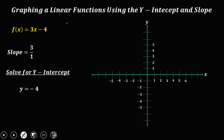To graph this function, plot first the y-intercept — that's y equals negative 4. Then using the slope, that's rise over run. Since the slope is positive, therefore the rise is upward — upward 3, counting 1, 2, 3. And the run is 1, so to the right — that's 1. So this is the coordinate.